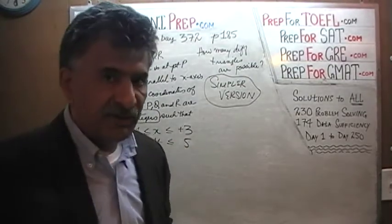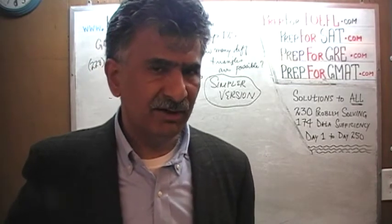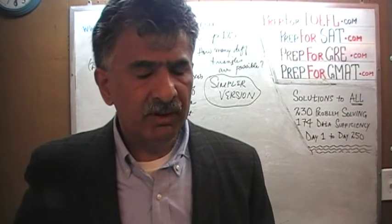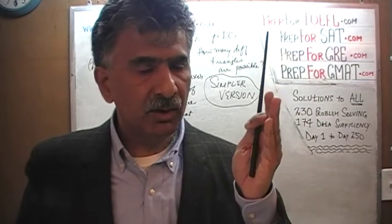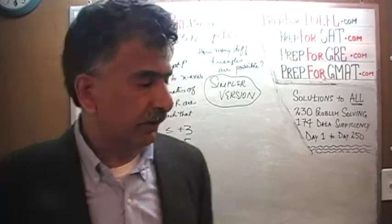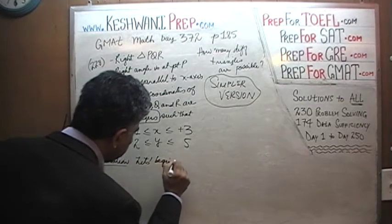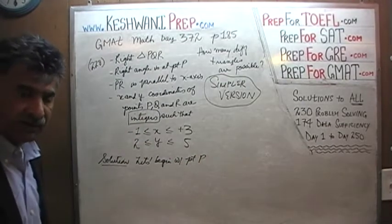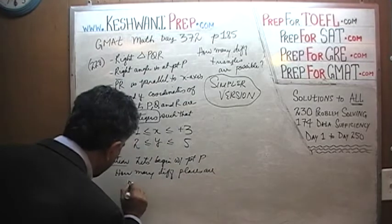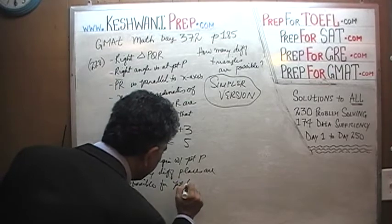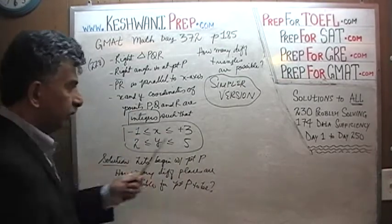Let's begin the process. We're going to start by asking how many different places are possible for point P, point Q, and point R. That's what we need to figure out — how many different ways can we have the three vertices of the triangle. Let's start with point P. In order to answer this question, we look at the region we're given and plot it.